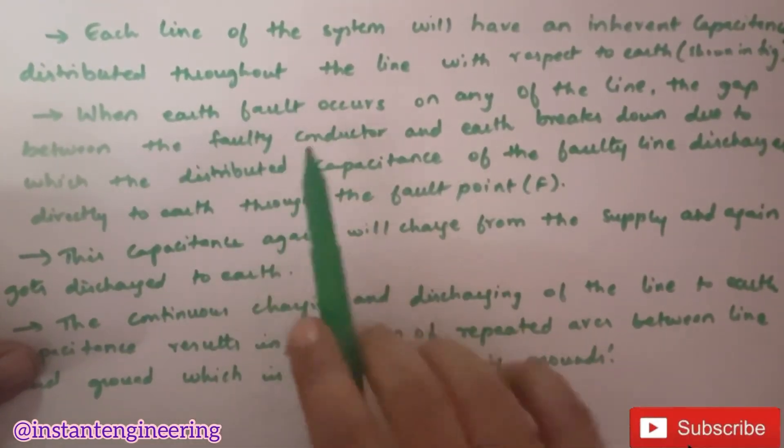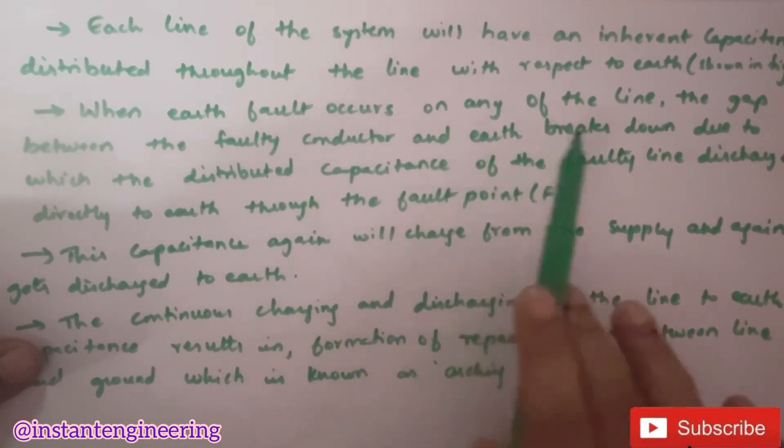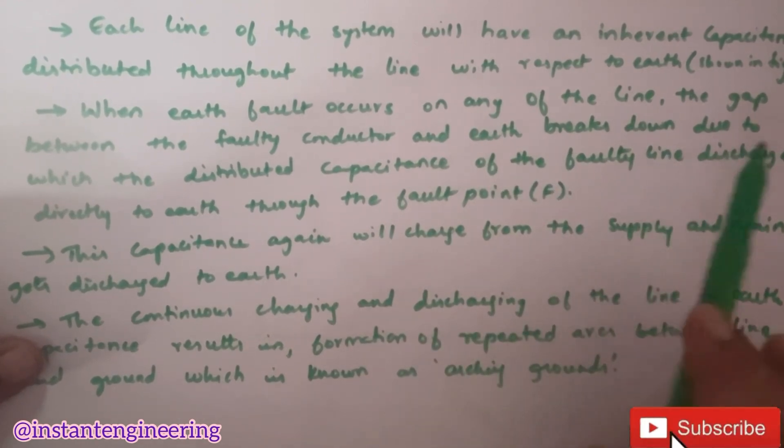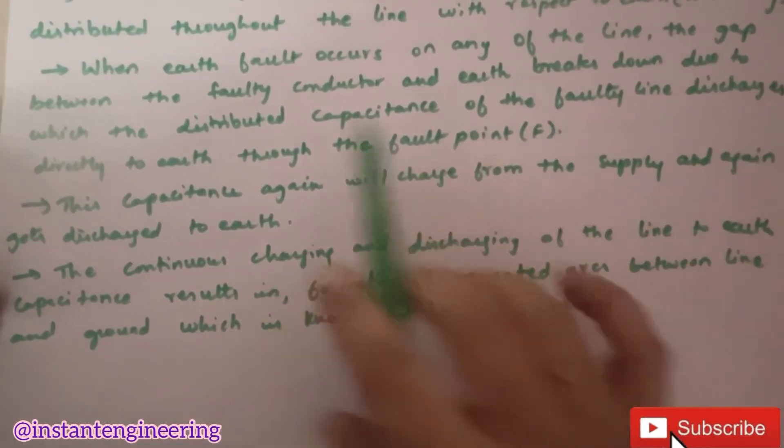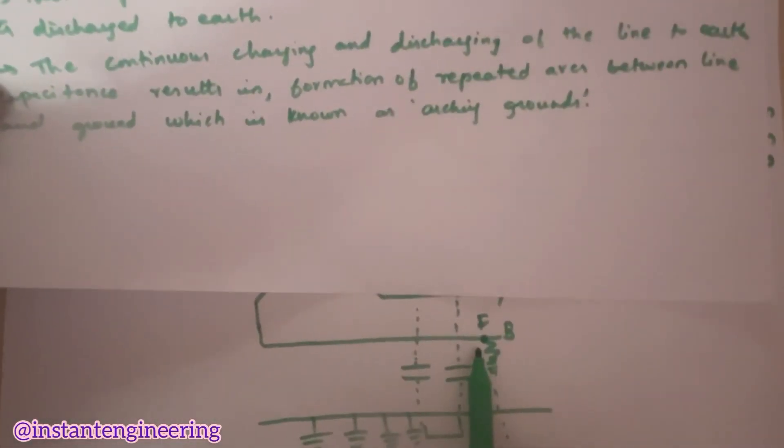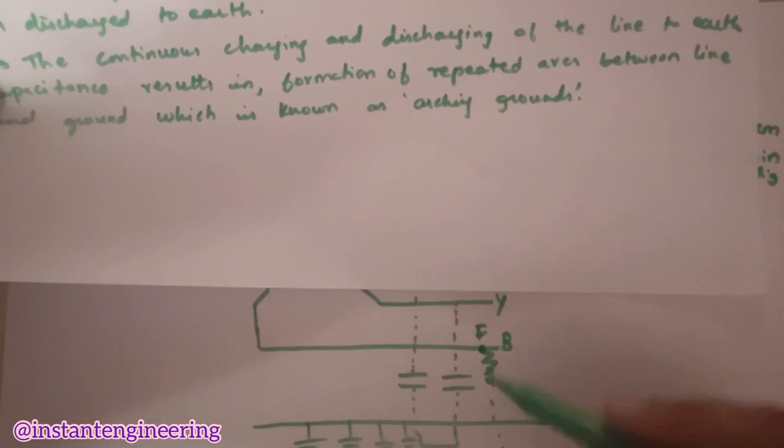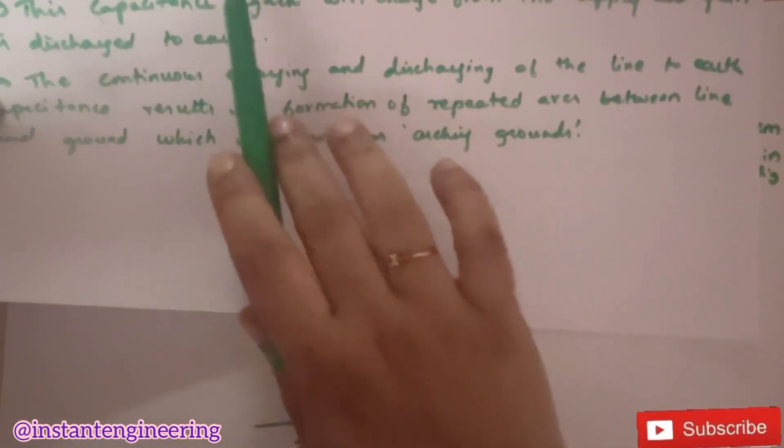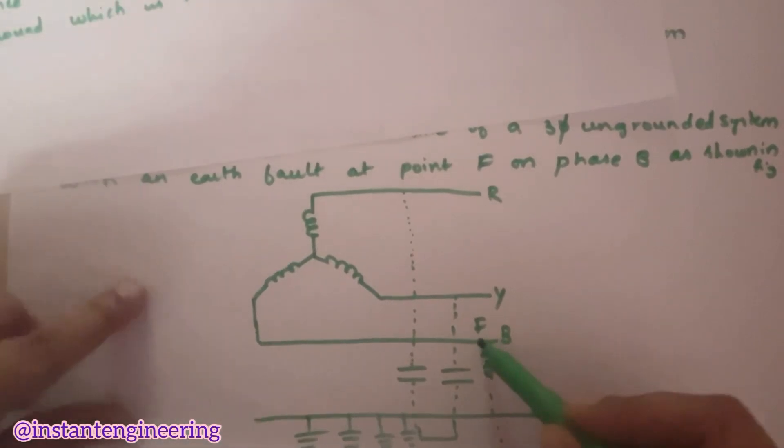When earth fault occurs on any of the line, the gap between the faulty conductor and earth breaks down due to which the distributed capacitance of the faulty line discharges directly to the earth through the fault point F. Like he said, so, if there is any fault occurs in the line, the gap between this faulty conductor and the earth will break down. See, it will break down and the faulty line discharges directly to the earth through the fault point F. It will go back to the earth.